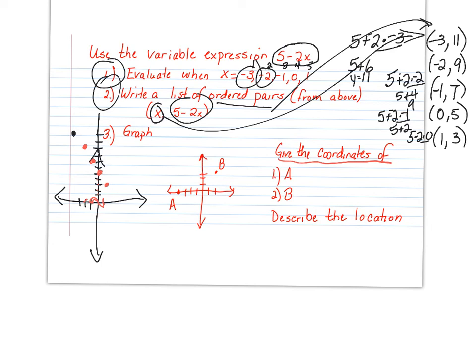Now, it says give the coordinates of point A and describe the location. So, point A, they want an ordered pair. A, well, look. You're going 1, 2, 3, 4. But, it's over in the negative direction. So, that's -4. We're not going up or down any, so that's 0. The location: Is it in a quadrant? Sure isn't. It's on the x-axis.